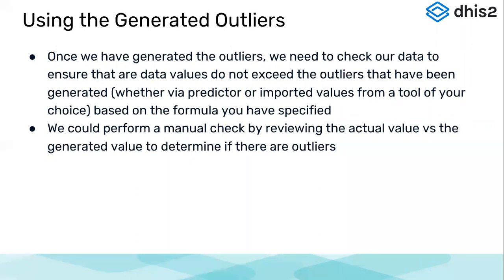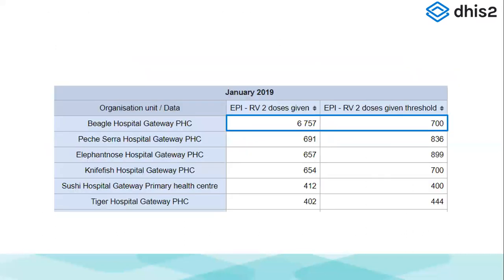The threshold values we generate through predictors, or we can import values from outside — say survey data or thresholds generated from other software. Those values can be imported into DHIS2 and used for validation rules. The process is the same: we need a data element where these thresholds are stored, either calculated from predictors or imported from external software. Then we can perform a manual check by reviewing the actual value versus the generated value.